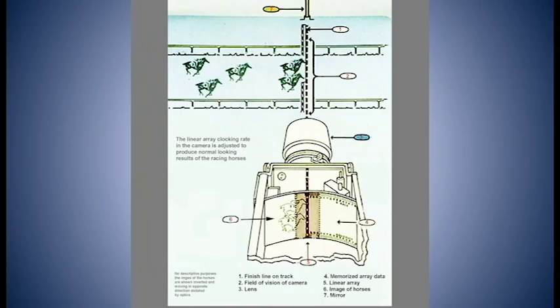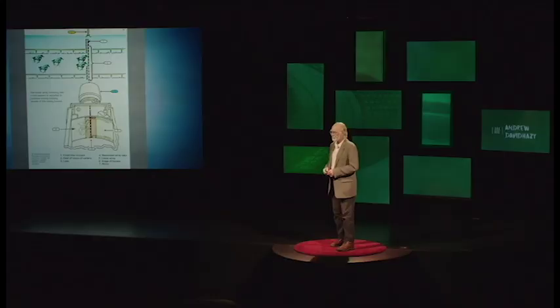A very popular application of these cameras is photo finish photography at racetracks. We all think we know what we're looking at when we're looking at a photo finish photograph. But I'm not so sure that that is really the case. In this case, we have the linear array and the camera aimed at the finish line on the track. When the race is started, the camera looks at the track, but all it can see is dirt. Dirt doesn't move.